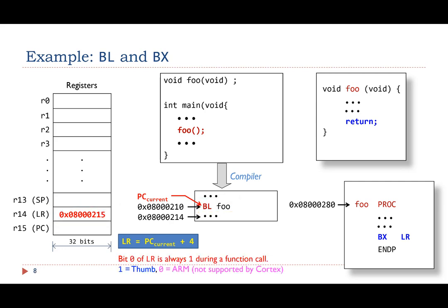In fact, the link register should have a value 0x800215 rather than 0x800214. This is because bit 0 of the link register is always 1 during a function call. The least significant bit is used to indicate whether the processor will run in the thumb state or in the ARM state when the function returns. Since ARM Cortex-M only supports the thumb state, the least significant bit of the link register is always 1 during a function call.